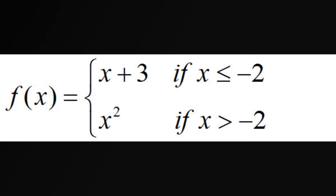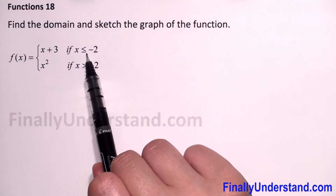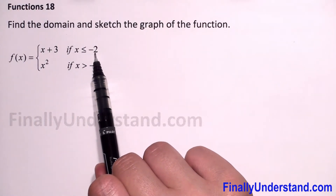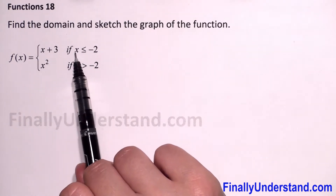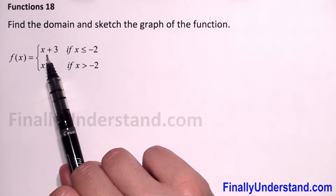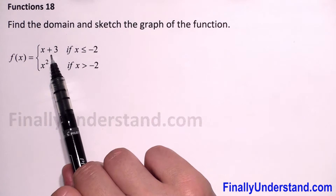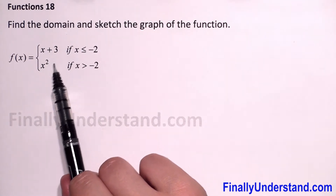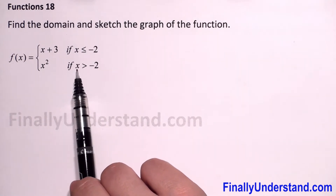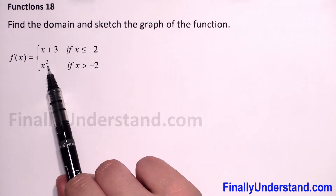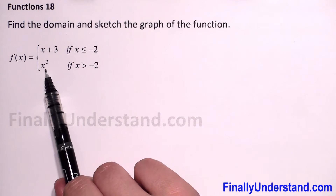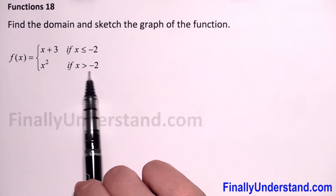We have a given function f, which has two parts. For x less than or equal to negative 2, we have x plus 3 — a linear function, whose graph is a straight line. For the second part, for x greater than negative 2, we have x squared, which is a quadratic function. The graph for this part will be a parabola.